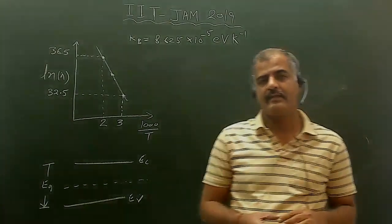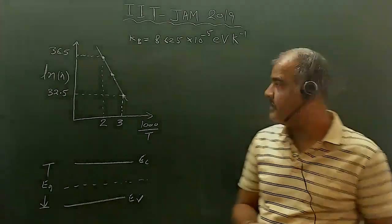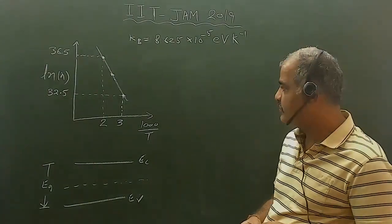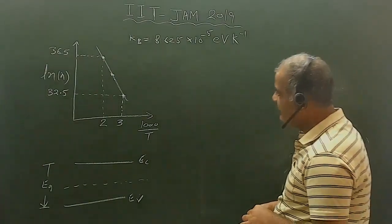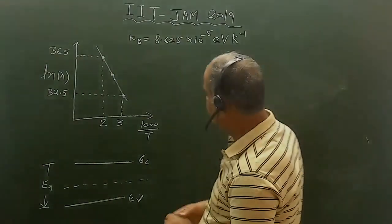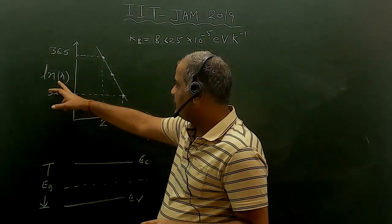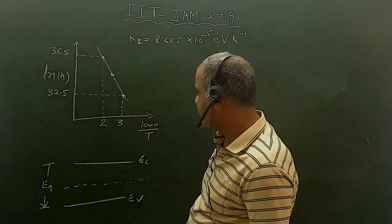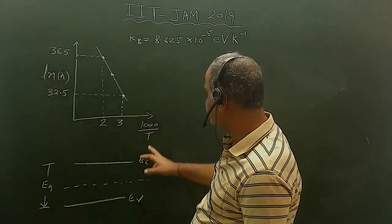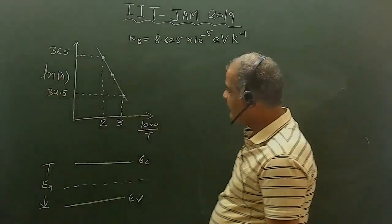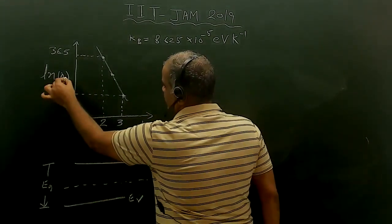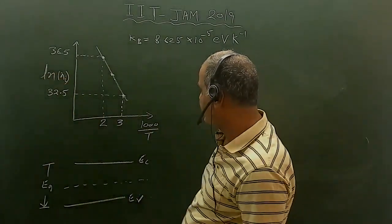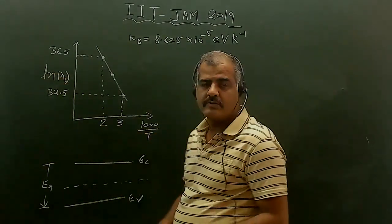Hello students, let us see this question from IIT JAM 2019 question paper. They have given a graph between n — the concentration of charge carriers — versus 1/T, where this is the intrinsic concentration. So they have given the graph between intrinsic carrier concentration versus temperature.